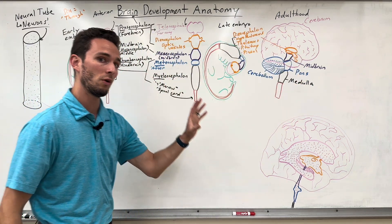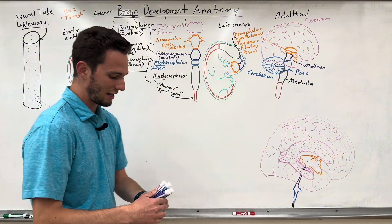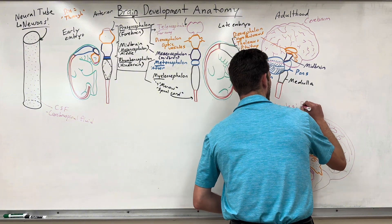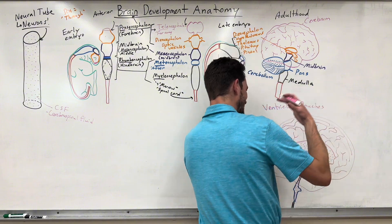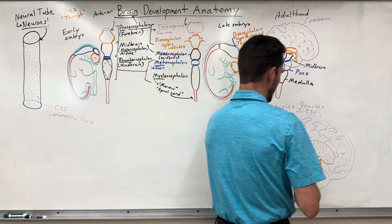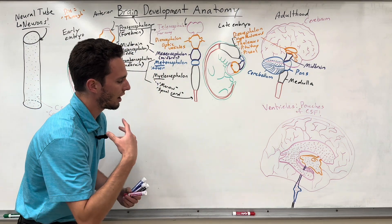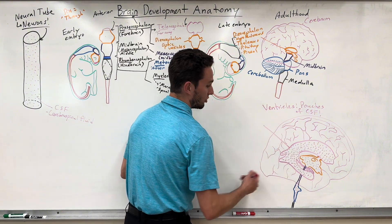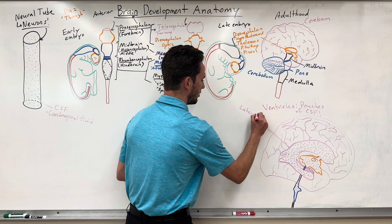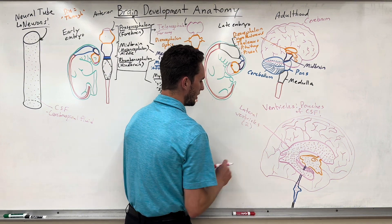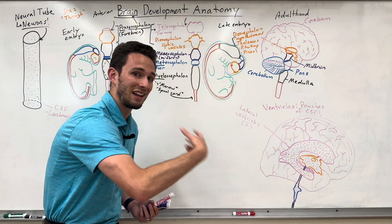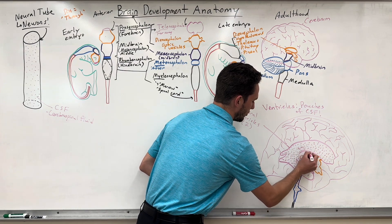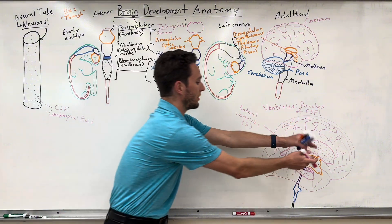Before getting into functions, let's quickly discuss the ventricles. Ventricles are pouches or containers of cerebrospinal fluid — CSF — that lubricate and nourish the brain and give it buoyancy. The first ventricles we see are the lateral ventricles — there are two of them. This is where the choroid plexus will be, lining the ventricles and secreting cerebrospinal fluid into the lateral ventricles before it travels through the remaining ventricles.